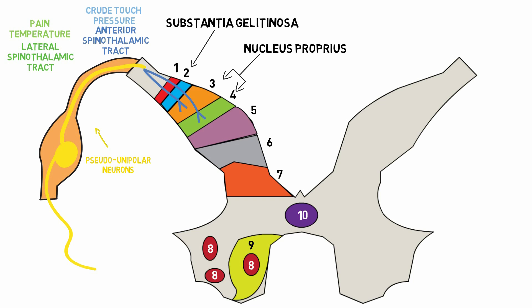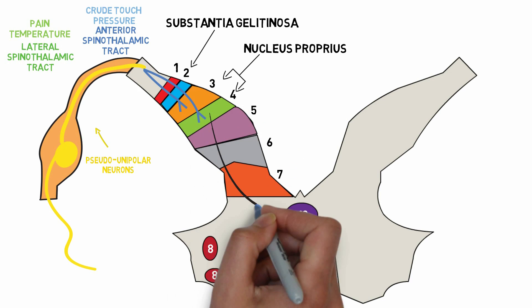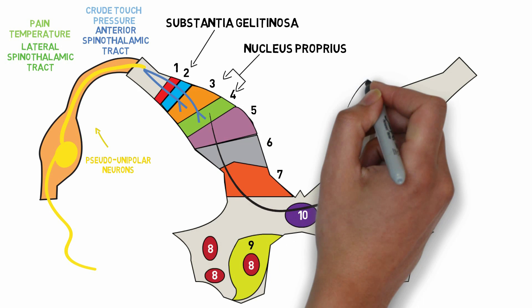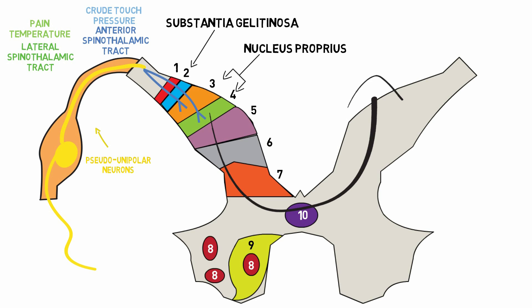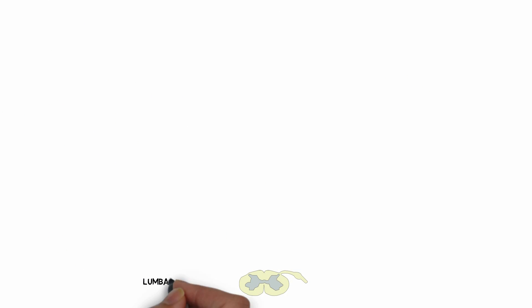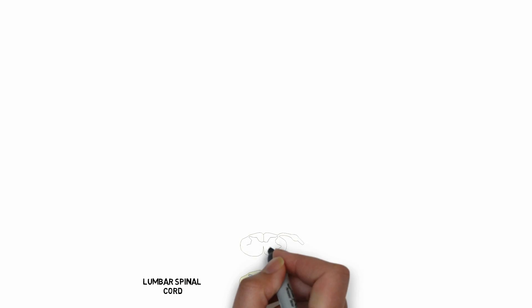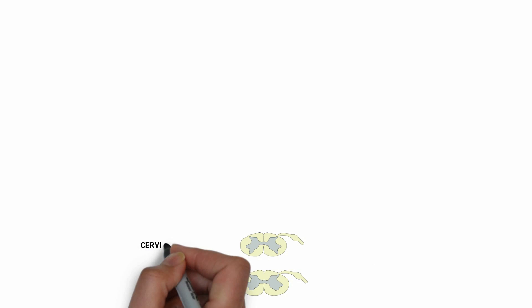In these laminae, neurons form synapses with the 2nd order neurons, which immediately cross to the opposite side of the spinal cord and travel up to the thalamus on the opposite side. This is how the first order neurons of the spinothalamic tract relay into the spinal cord and form synapses with the 2nd order neurons.